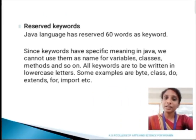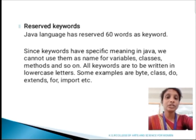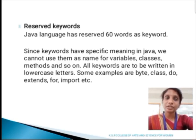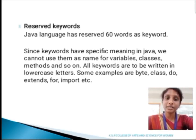A keyword has a special meaning in Java. It can't be used for naming variables, classes, methods, functions and so on. It is written in lowercase letters. Examples: by, class, do, if, for and so on. Java has 60 words as keywords.